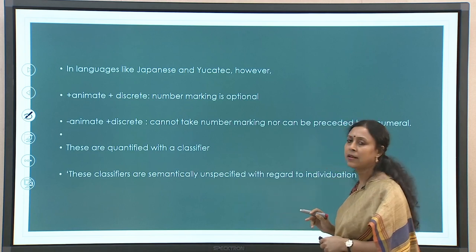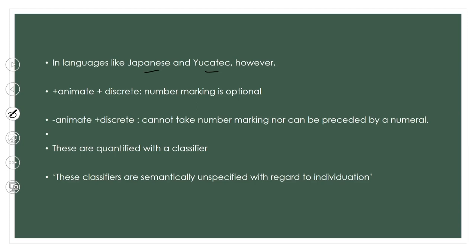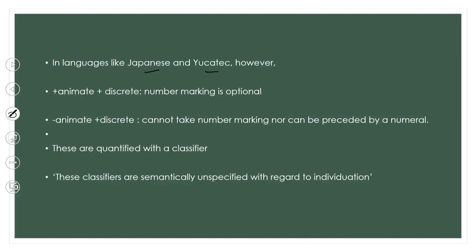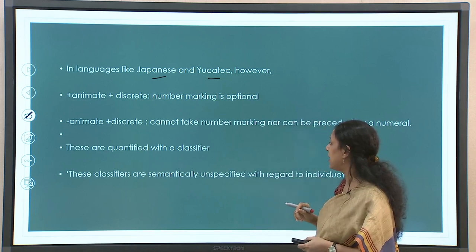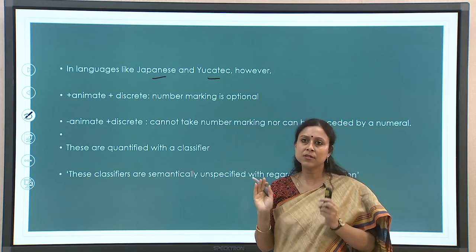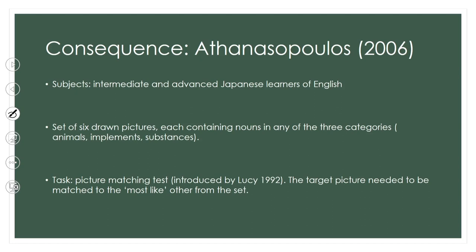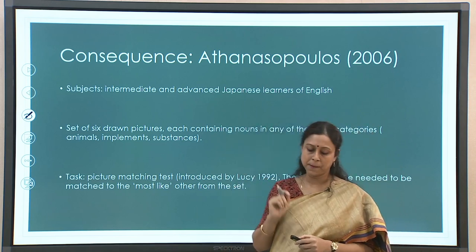Some languages are rather different in this regard. In Japanese, for animate plus discrete entities, number marking is optional — unlike English where you must differentiate one cat from two cats. For minus-animate plus-discrete entities in Japanese, they cannot take number marking nor be preceded by a numeral. Instead, classifiers are used. These classifiers are semantically unspecified — they do not specify individual units, they are not individuated. The focus is more on substance than on the individuated entity. This is another area where cross-linguistic differences have important implications for bilingual cognition.